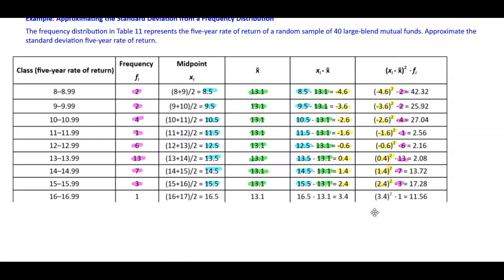The class 16 to 16.99 has a frequency of 1. The midpoint is 16.5 and the sample mean is 13.1. Taking 16.5 minus 13.1 gives 3.4. 3.4 squared times the frequency of 1 gives 11.56.